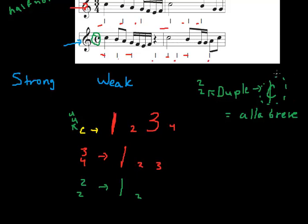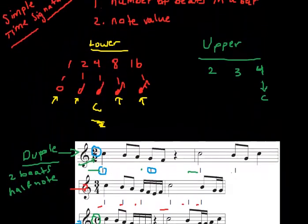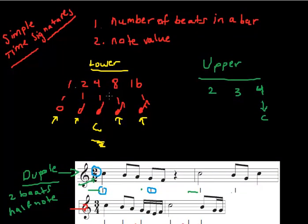That's it for simple time signatures for now. Basically, we just went over the simple time signatures, which again, the lower number could be any of these guys. The upper number is usually this. We went over 2/2, 3/4, 4/4 which is common time, and 2/4. Stay tuned for next video. Thank you.